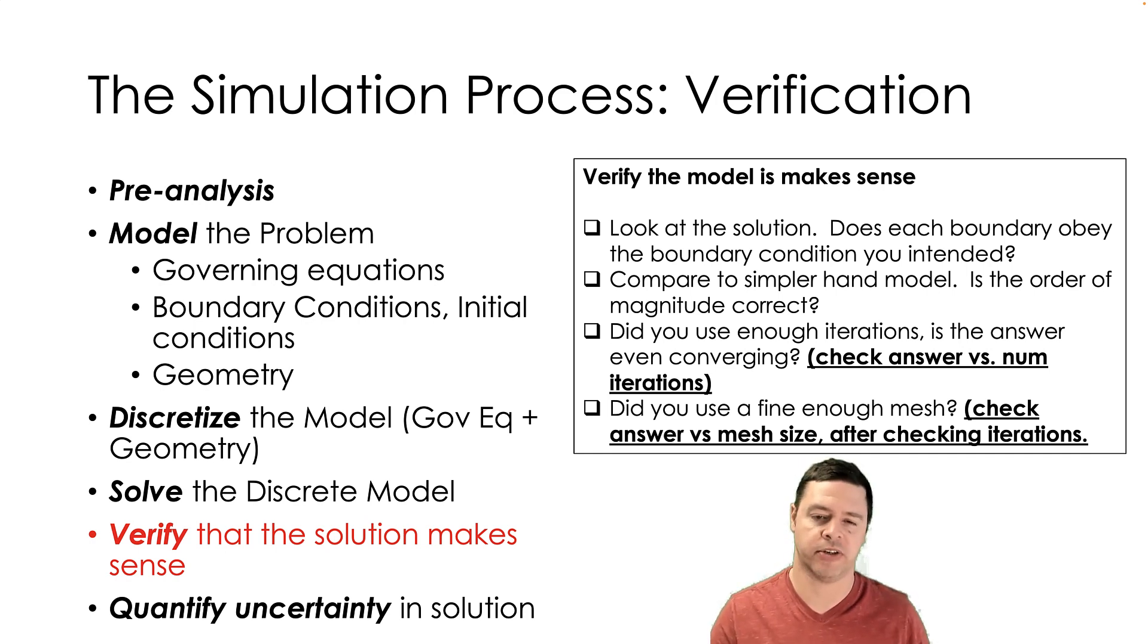So basically, there's a couple different ways you can do this. Typically, in a simulation, you'll define what's called a result control. Let's say that there's something you care about in a system. Let's say I'm doing a CFD simulation of an aircraft. And ultimately what I'd like to do is calculate the lift on the wing. What you can do is you can just plot the lift on the wing versus iteration number.